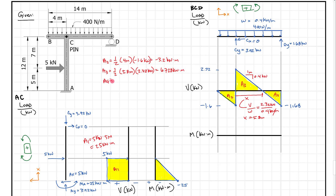For Area 4, the remaining distance from the zero-crossing to point D is 10 minus 5.8 = 4.2 meters. Area 4 is one half times 4.2 meters times the height of minus 1.68 kilonewtons, giving minus 3.528 kilonewton-meters. Don't miss that negative sign — it tells us which way the moment diagram goes.